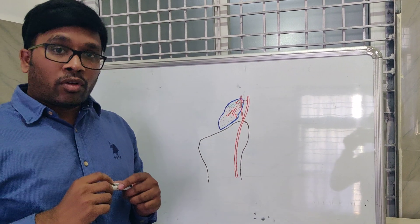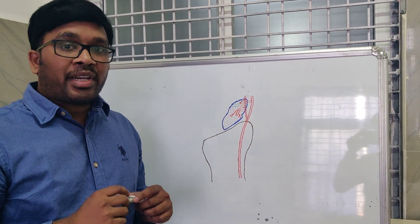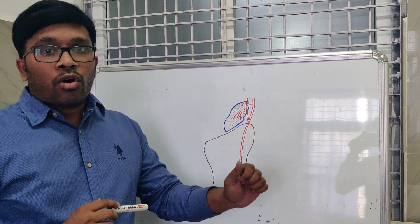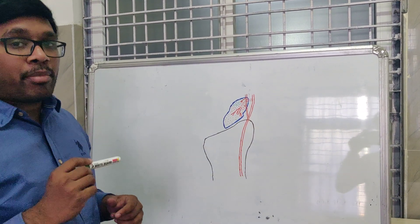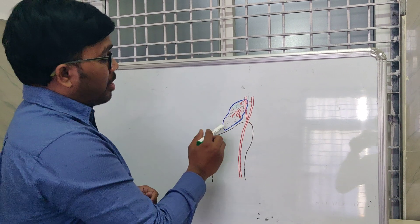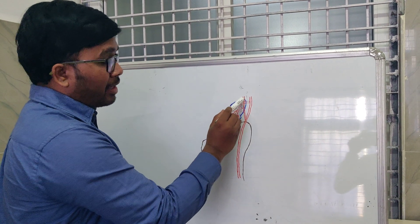When there is a fracture of the scaphoid, which most commonly happens with a fall on an outstretched hand, the fracture can happen in three places: the proximal pole, the waist, and the distal pole.